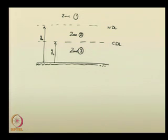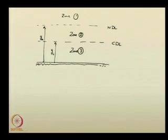For all channel types — mild slope, steep slope, critical slope, adverse slope — one can easily identify three zones. Zone 1 represents the region above the topmost line, which can be either the critical depth line or the normal depth line, whichever is higher. If it is supercritical flow, the critical depth line is above the normal depth line, so the region above the upper line is zone 1.